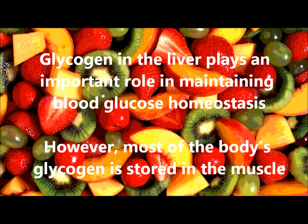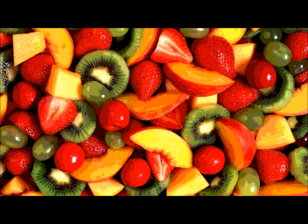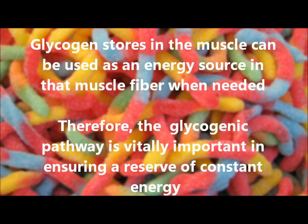However, most of the body's glycogen — about 75% — is stored in the muscle, because the muscle makes up a much greater portion of the body's weight than the liver. The glycogen stores in the muscle can be used as an energy source in that muscle fiber when the body is confronted by an energy demand, such as physical exertion. Therefore, the glycogenic pathway is vitally important in ensuring a reserve of constant energy.